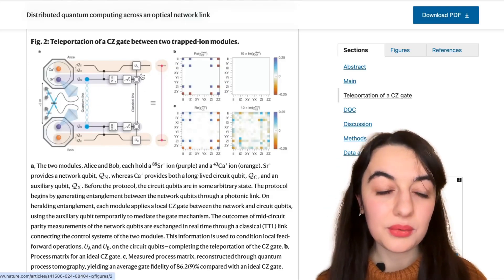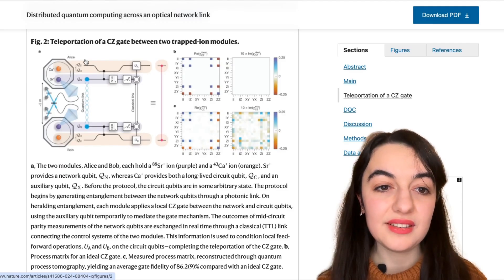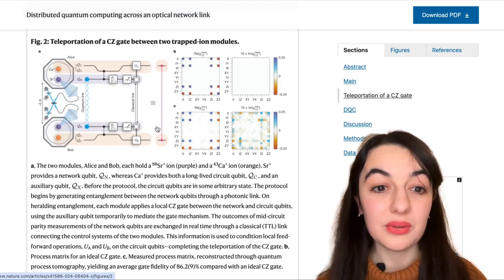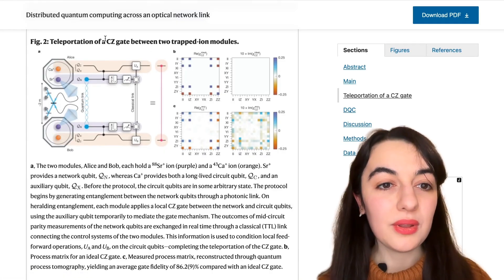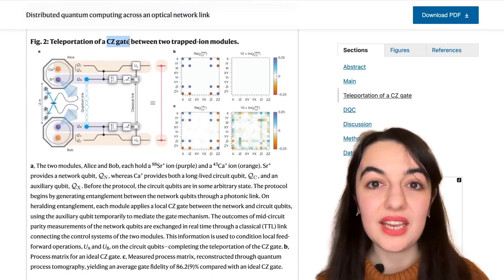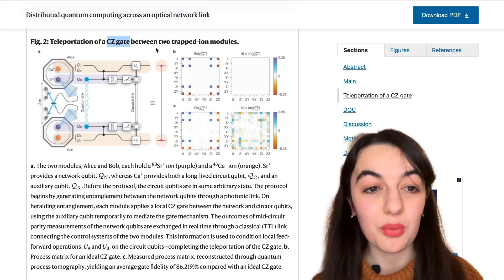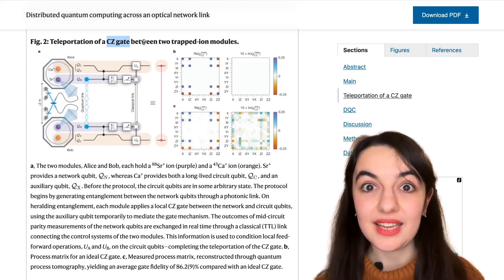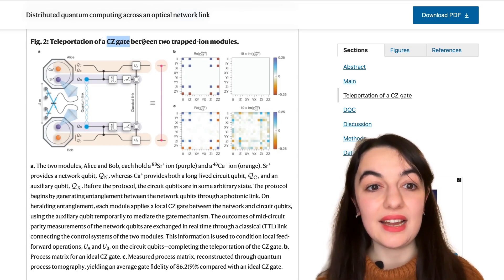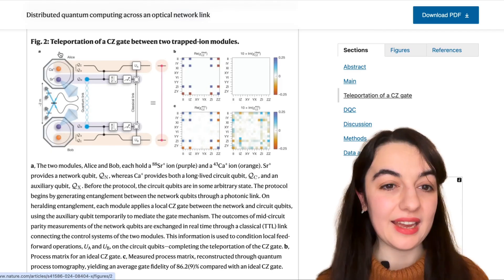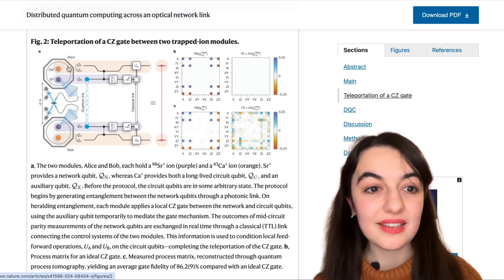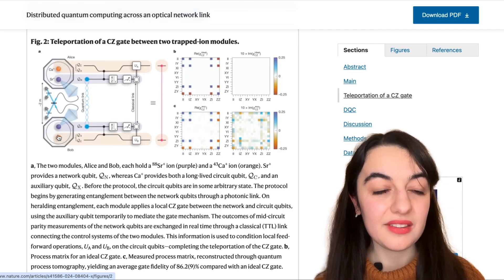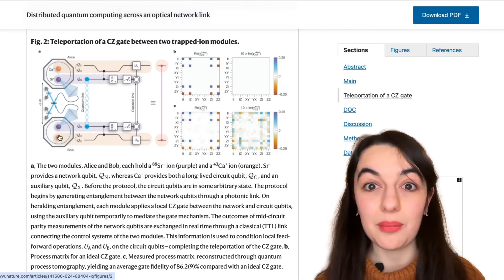But in standard quantum teleportation, you have one data qubit here and then it gets transported to Bob via this teleportation process. Now, here we're teleporting a quantum gate, a quantum operation called a control Z gate. This is a gate that acts on two qubits. And this protocol is going to implement this gate on these two qubits. One that Alice has and one that Bob has.